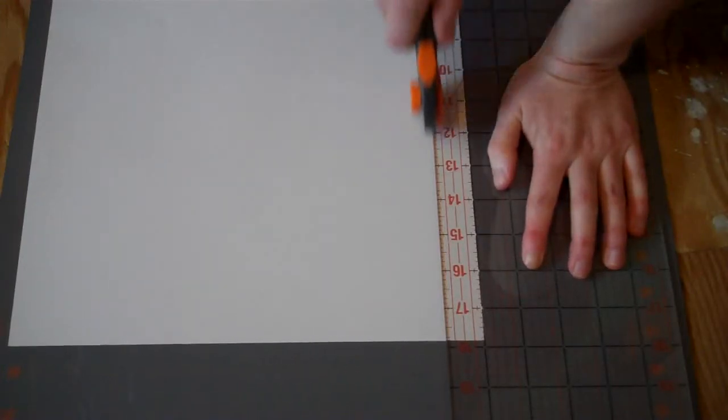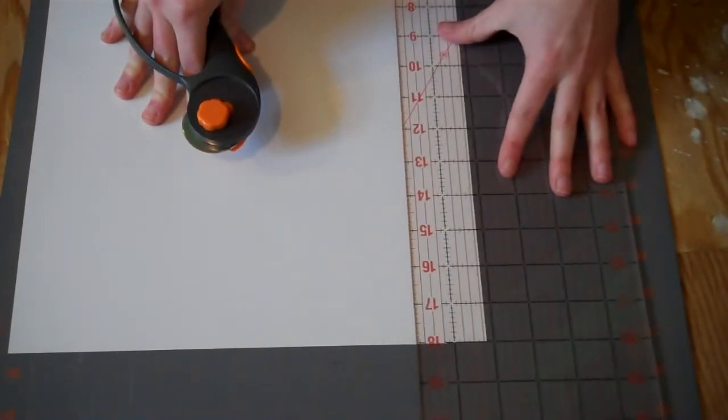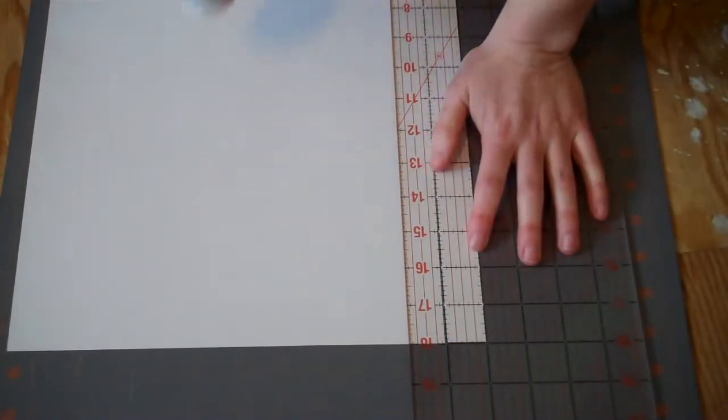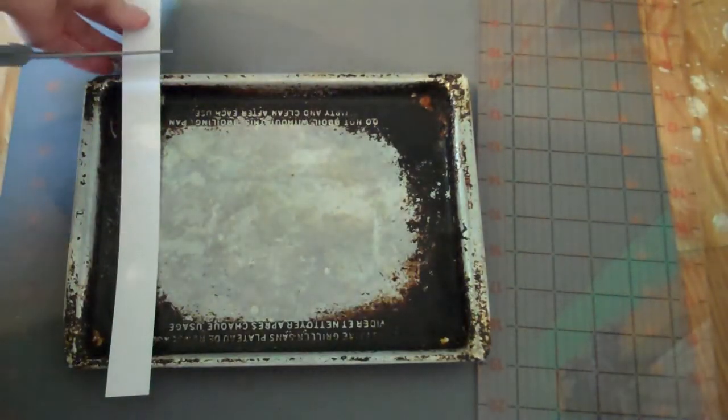You'll start by cutting yourself some strips of white scrapbooking paper and you want each strip to be about an inch wide and about a half an inch longer than the width of your tray on each side.